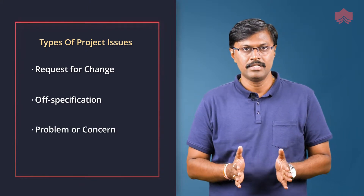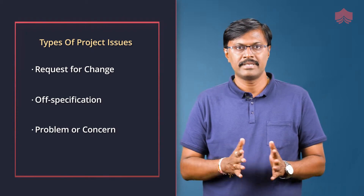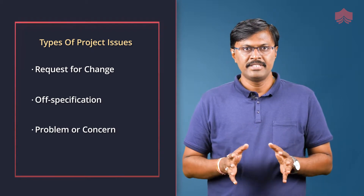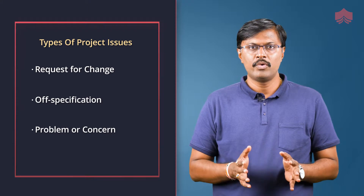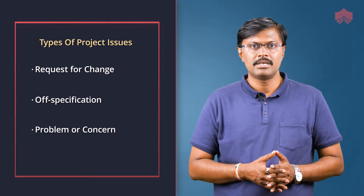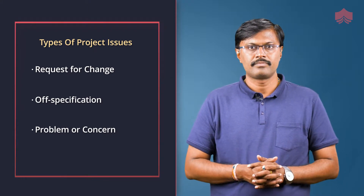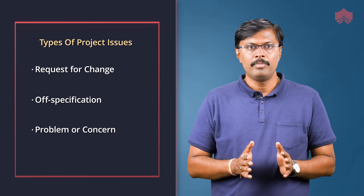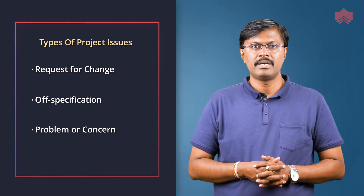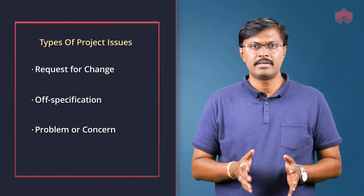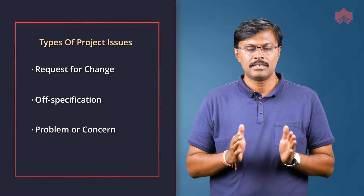Request for change is a proposal for a change to a baseline. Off specification is something that should be provided by the project but currently is not provided. Problem or concern is any other issue that the project manager needs to be addressed, escalated and resolved.